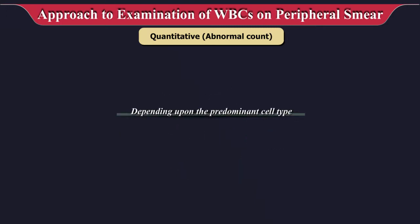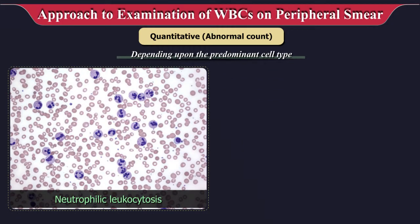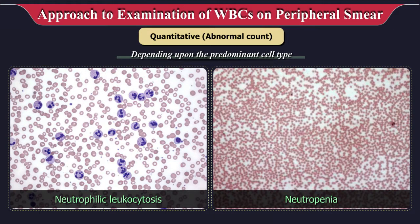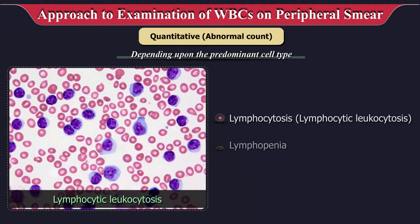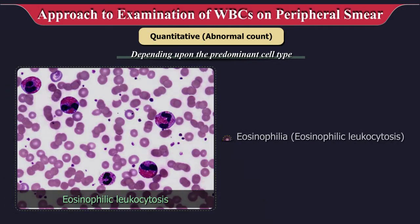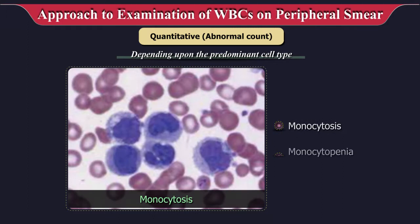Depending upon the predominant cell type, it is called neutrophilia or neutrophilic leukocytosis or neutropenia, lymphocytosis or lymphopenia, eosinophilia or eosinophilic leukocytosis, monocytosis or monocytopenia.